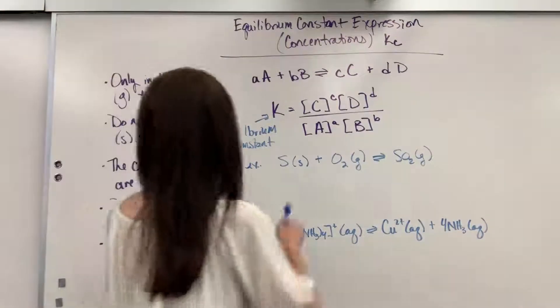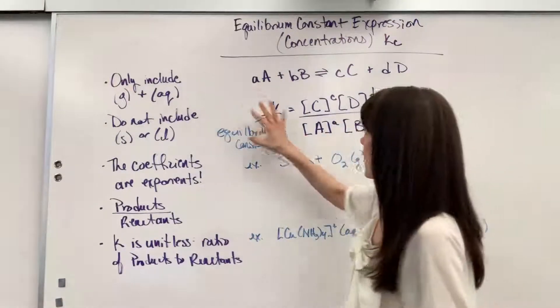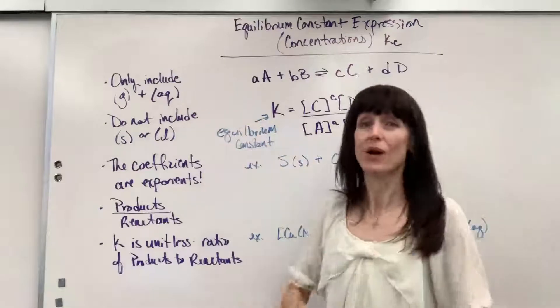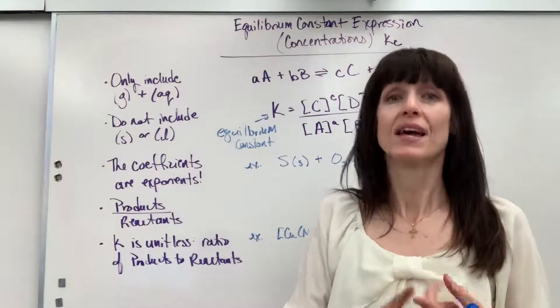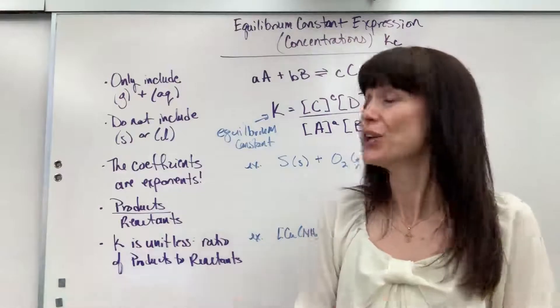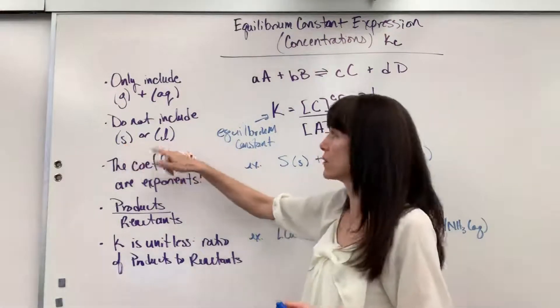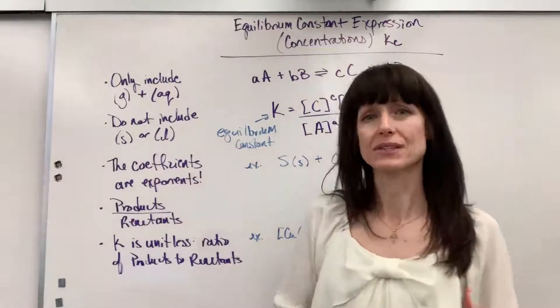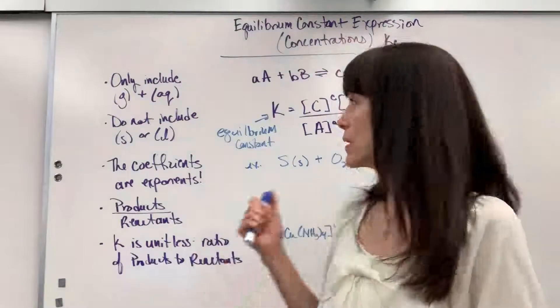So a couple of things as we move forward before we do our examples. When we're writing our equilibrium expression, we only write down the products and reactants that are gas and aqueous phases. You never include anything that is a solid or liquid. And the reason why is those are both considered constant, that they don't change the overall equilibrium expression.